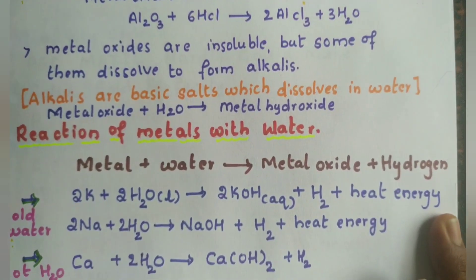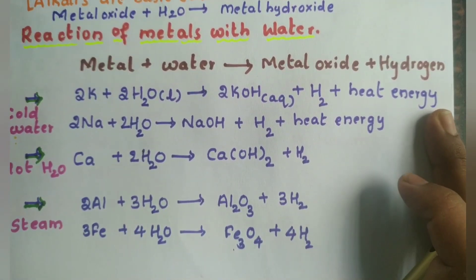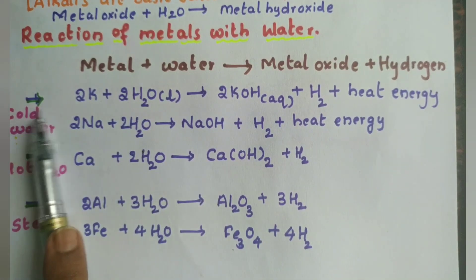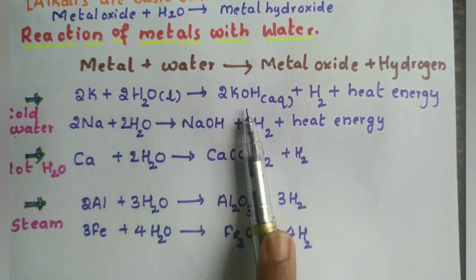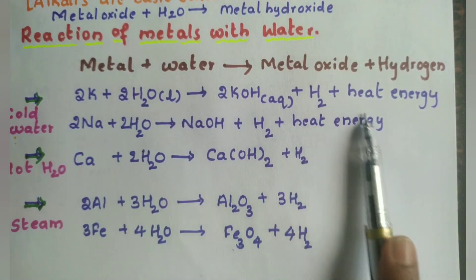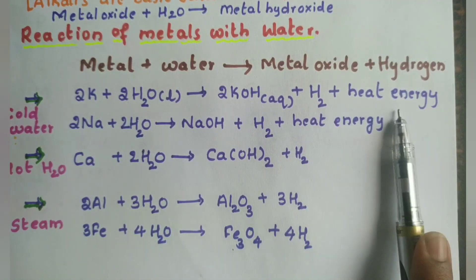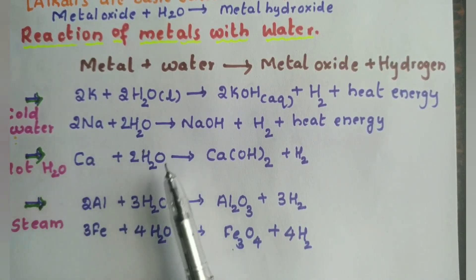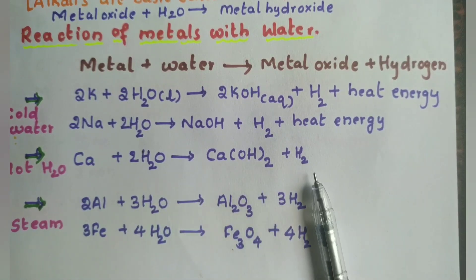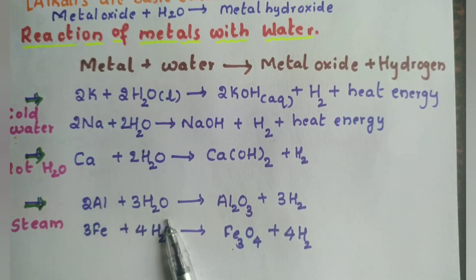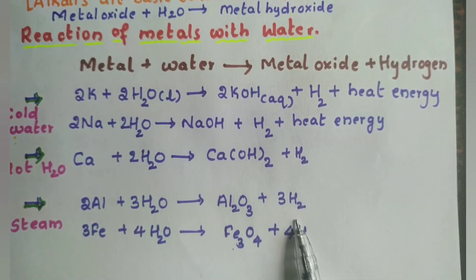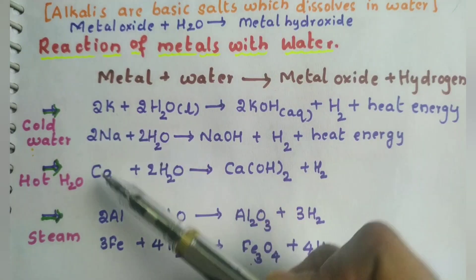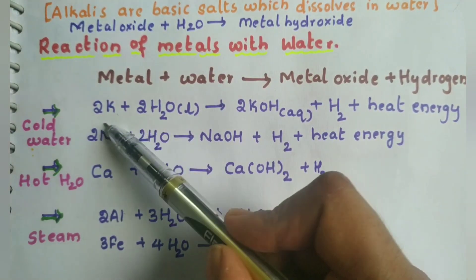Next we study the reaction of metals with water. When a metal reacts with water it forms metal oxide plus hydrogen gas is released. Potassium reacts with water to form potassium hydroxide (KOH); hydrogen gas and heat energy are released. Whenever there is release of heat energy, we call that kind of reaction an exothermic reaction. Calcium reacts with water to form calcium hydroxide and hydrogen gas. Aluminium reacts with water to form aluminium oxide and hydrogen gas. So what is the difference between these three metals — potassium, calcium, and aluminium?